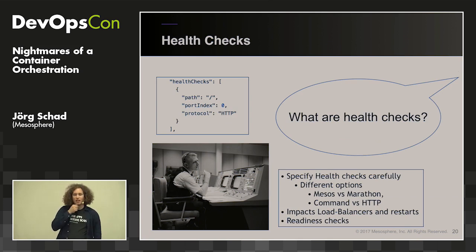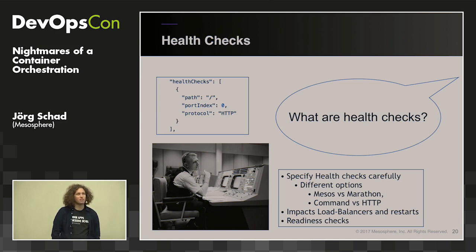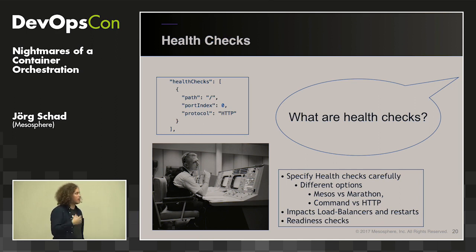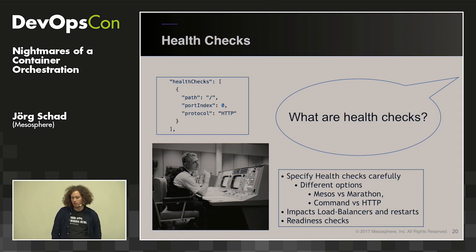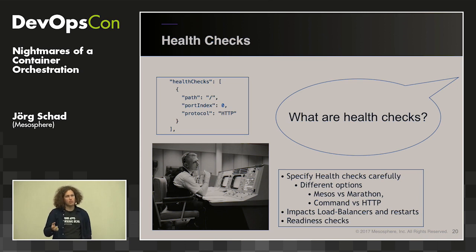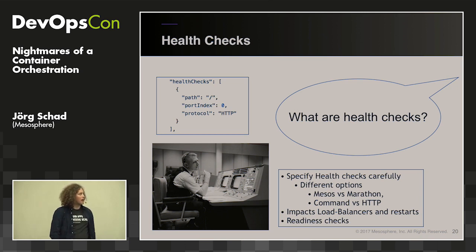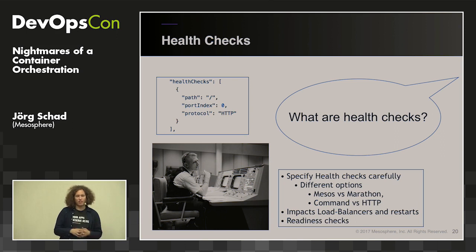Health checks are your indicator to the container orchestrator of what's running healthy and what should be restarted. They have a lot of implications — for example, load balancers also consider health checks when deciding where to route traffic. If your application's health check says 'unhealthy,' the orchestrator stops routing traffic there, and if it remains unhealthy, it will kill that container and restart a new instance, hoping the new one will become healthy again.